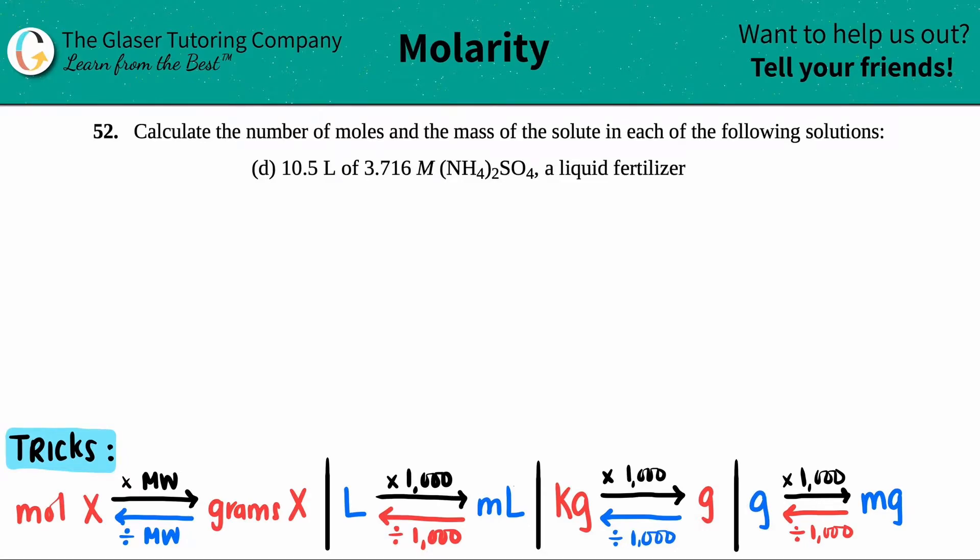Number 52. Calculate the number of moles and the mass of the solute in each of the following solutions. And then we have letter D.